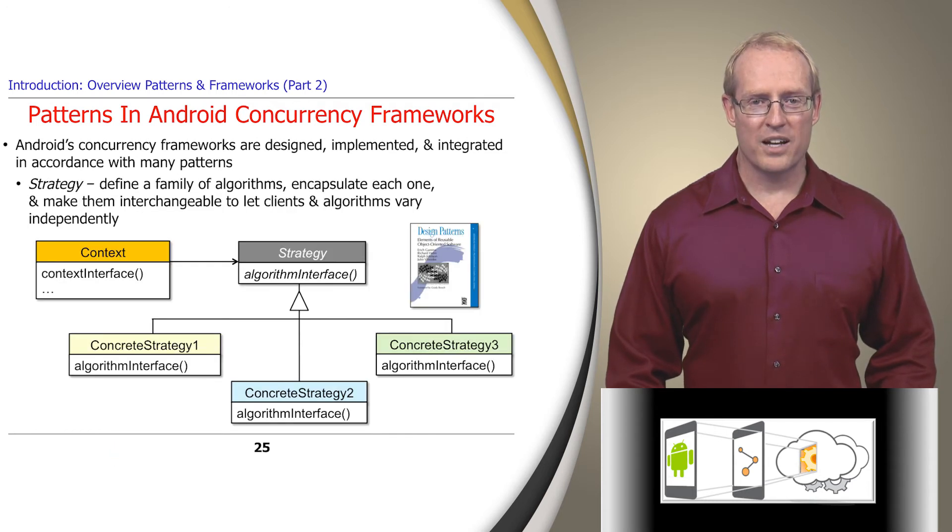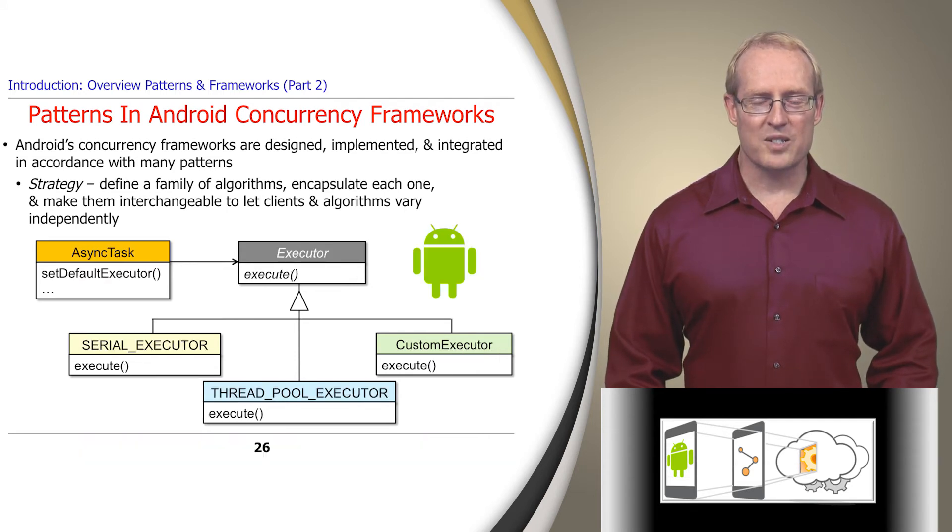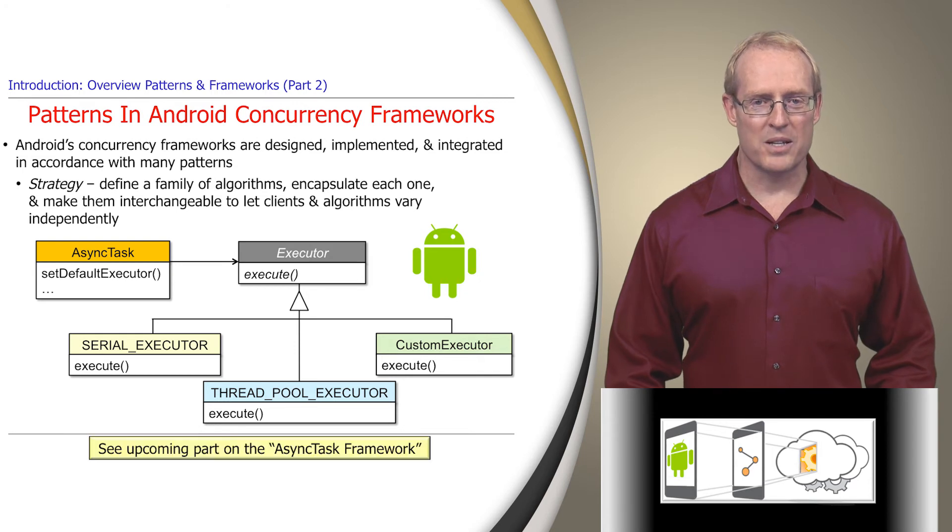The strategy pattern defines a family of algorithms, encapsulates each one, and makes them interchangeable, so that clients and algorithms can vary independently. The Android AsyncTask framework applies this pattern to configure which type of executor is used to run async tasks, which can be serialized or run in a thread pool, depending on the designated strategy, as described in this upcoming video.